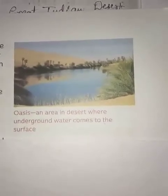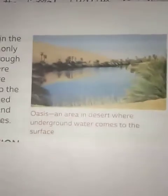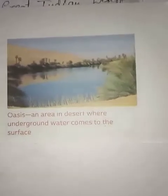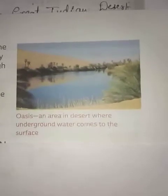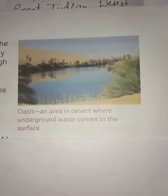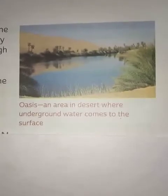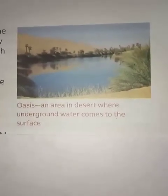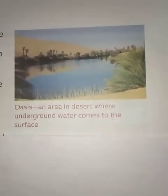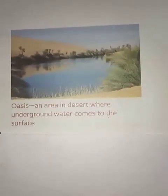The desert region is made up of loose sand and rocks. Due to strong winds, hills are formed which are called sand dunes. There is a scarcity of water, and only the River Luni flows through the Great Indian Desert. Where underground water comes to the surface, it forms an oasis, and people generally settle near these places for their day-to-day activities.